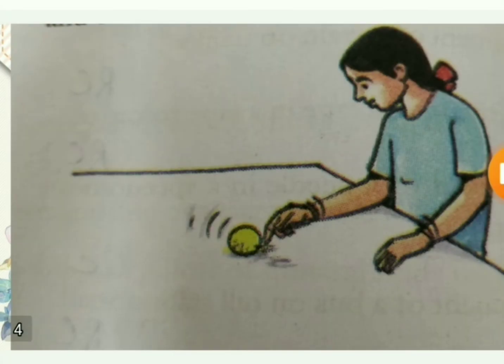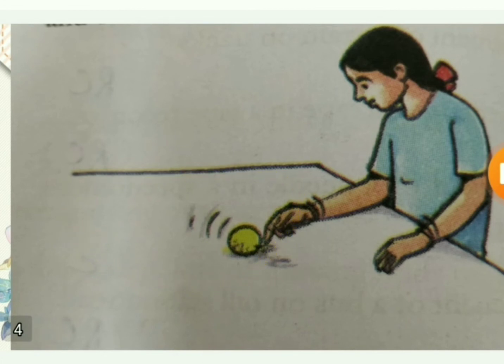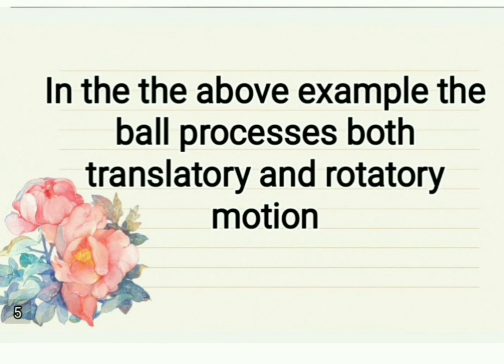In the same way, each particle of the ball moves in a circular path about a particular line when the ball rolls on the surface. So it will be doing both types of motion — translatory and rotatory. When the ball is rolling and moving in a straight line, both types of motion are present. In the above example, the ball possesses both translatory and rotatory motions.